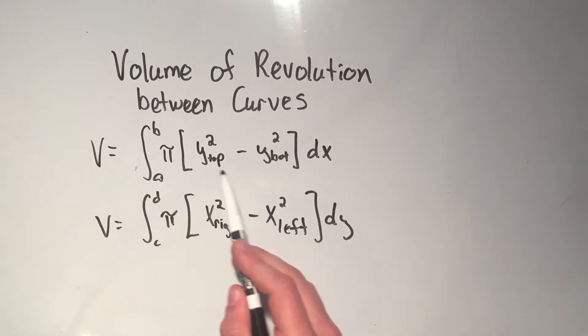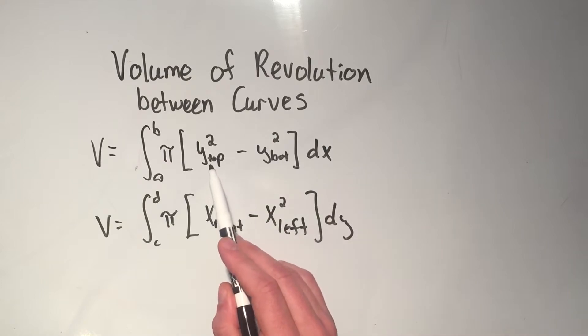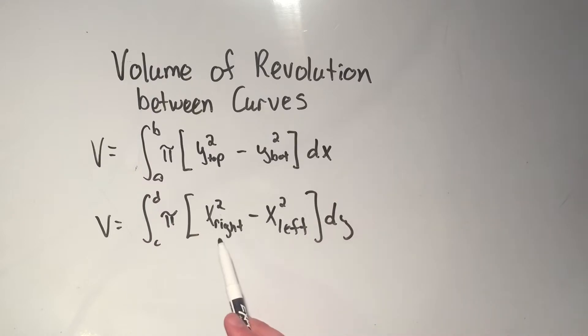So just remember that if I'm revolving around the x-axis for the cross section method, I use dx. And if I've got two curves, I do the top minus the bottom. And remember, it's squared because the formula for a circle is pi r squared. And it's the same thing if I'm revolving around the y-axis. It's just I need to do right minus left.